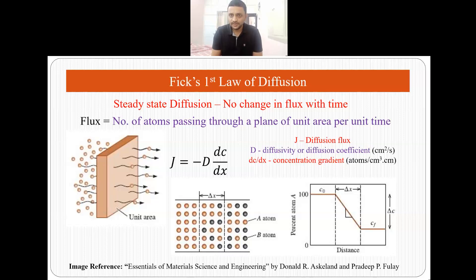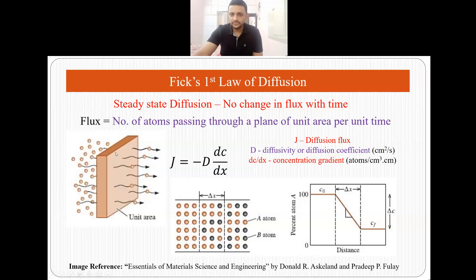What is flux? Flux is the number of items passing through a unit area per unit time. Suppose you have this block of material with you, which is of unit area. How many atoms are passing through this unit area block per unit time is what we mean by flux.